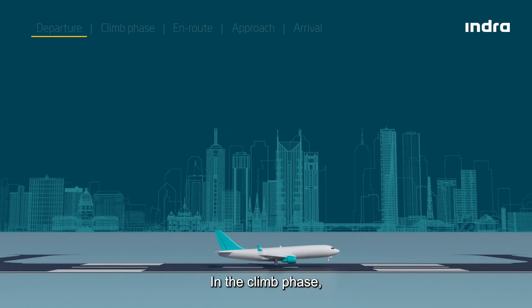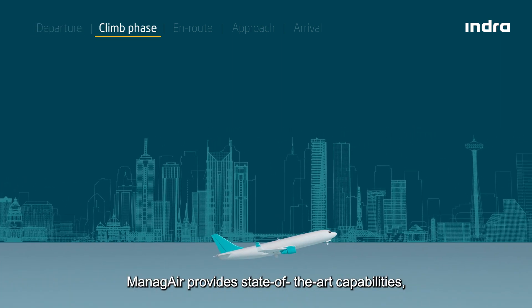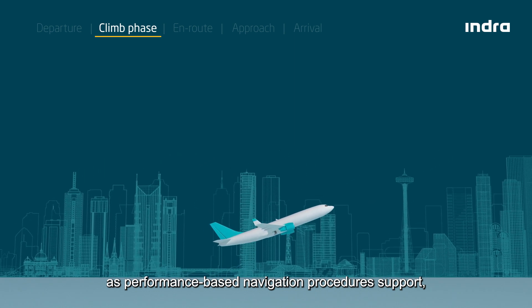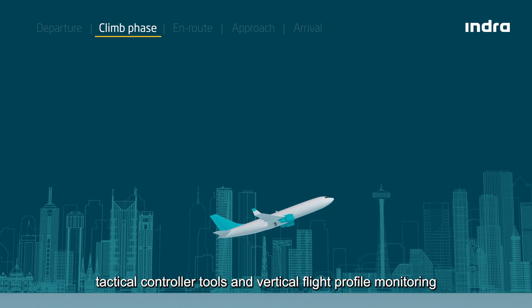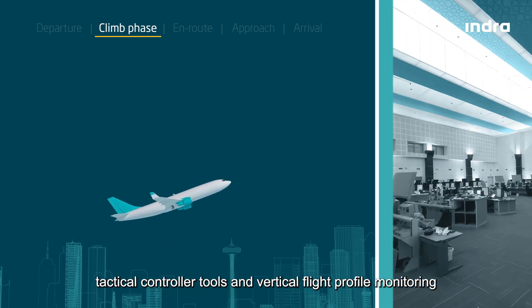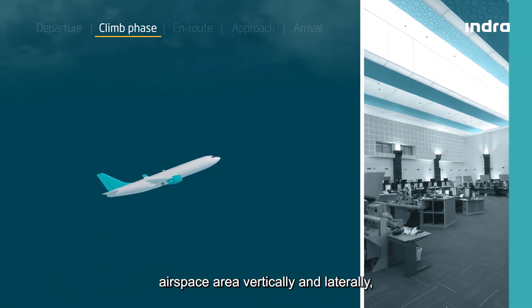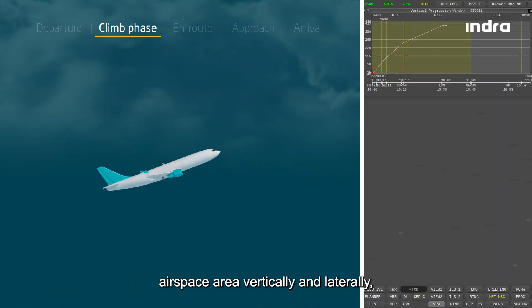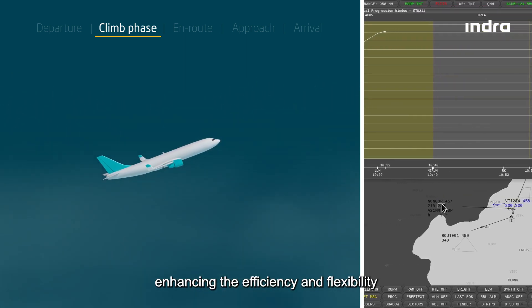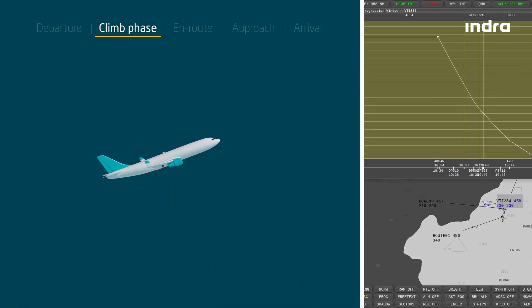In the climb phase, ManageAir provides state-of-the-art capabilities such as performance-based navigation procedures support, tactical controller tools, and vertical flight profile monitoring that reduce the protected airspace area vertically and laterally, enhancing the efficiency and flexibility of the terminal airspace design.